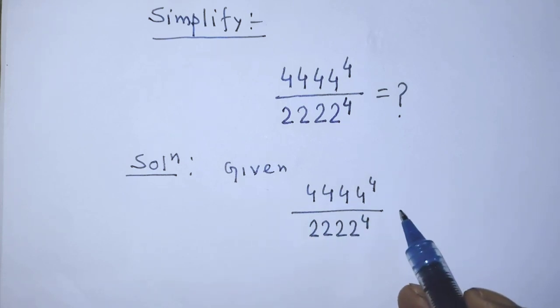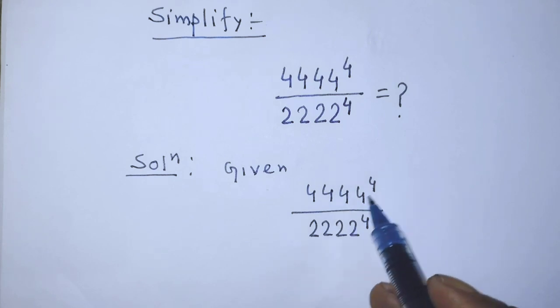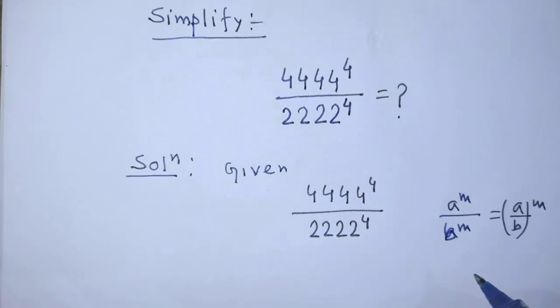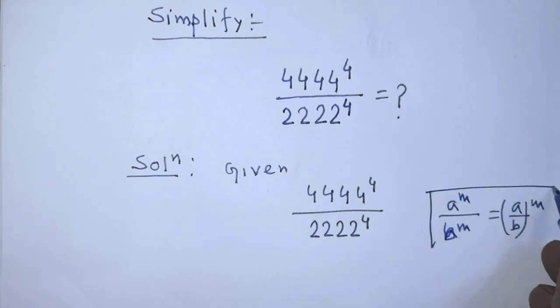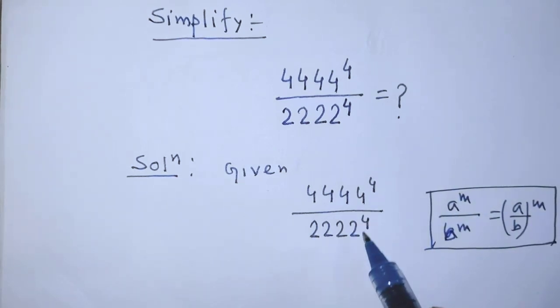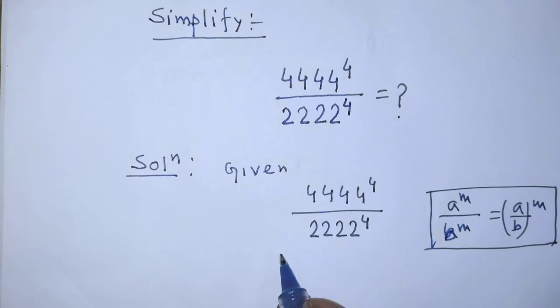In this algebraic expression, in numerator and denominator, the power of both exponential forms is the same. So according to this formula, in the first step of the solution it will be 4444 over 2222 whole to the power 4.